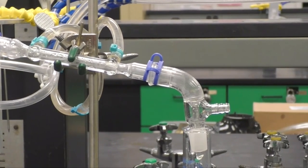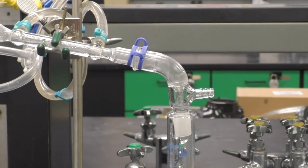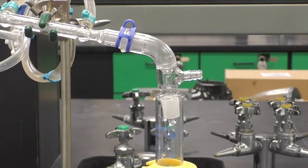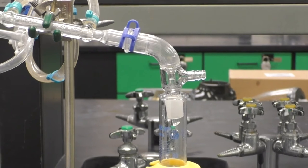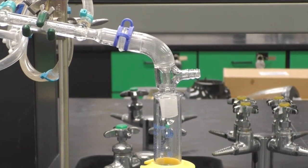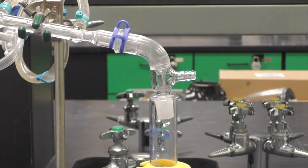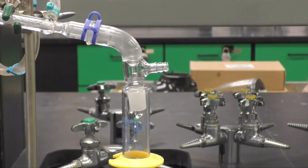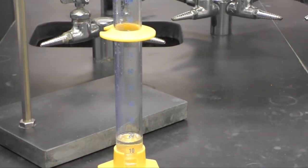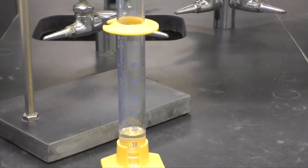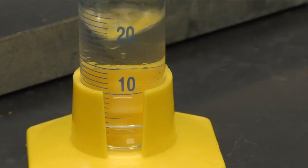As the vapors are cooled in the condenser, they will become liquid again and drip out of the vacuum adapter into the 100 milliliter graduated cylinder. This condensate contains your limonene oil.